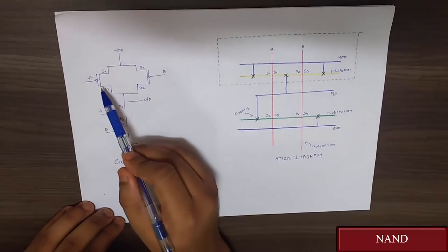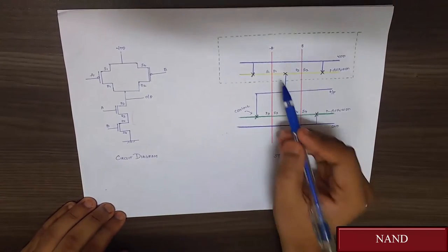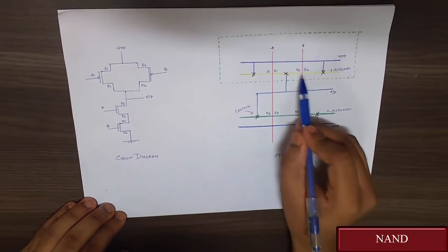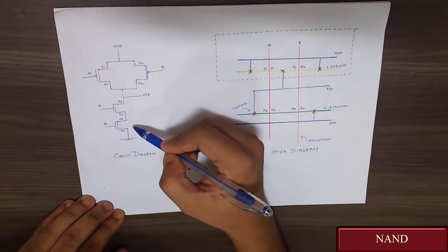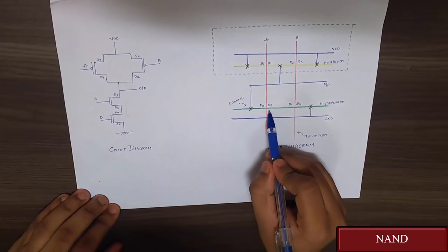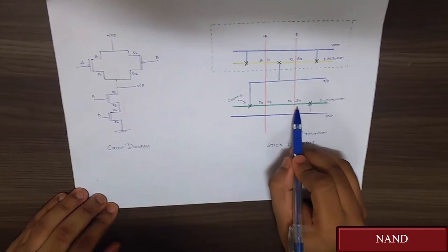So we consider the direction from A to B. Hence we write S1, D1, D2, S2, and in NMOS we consider again A to B. So D3, S3, D4, S4.